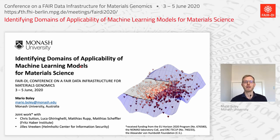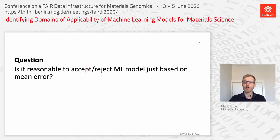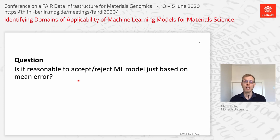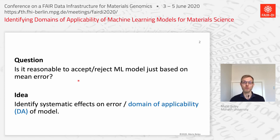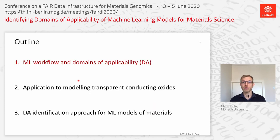Our work is called 'Identifying Domains of Applicability of Machine Learning Models for Material Science.' The question we're asking is: is it actually reasonable to universally or unconditionally accept or reject a machine learning model based on a single error statistic such as the mean error? Or can we do something smarter — identifying systematic effects on that error and coming up with a domain of applicability to work with the model in a more informed way?